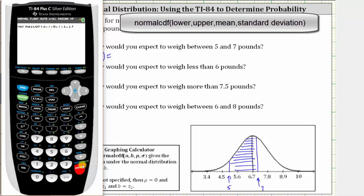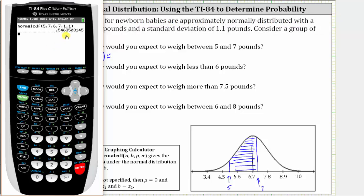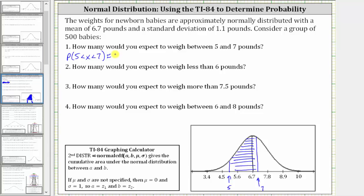To four decimal places, we have approximately 0.5464, which is equal to 54.64%. To answer the question — how many of the 500 babies would you expect to weigh between 5 and 7 pounds — we need to find 54.64% of 500. To do this, we convert the percent to a decimal, which is 0.5464, and multiply by 500.